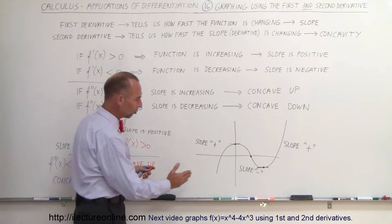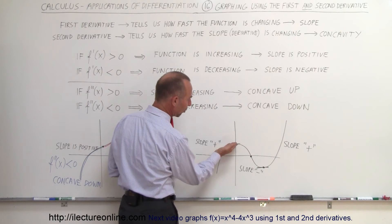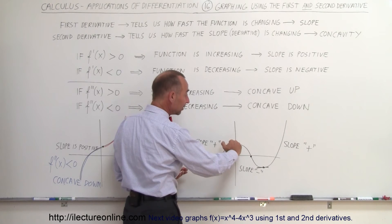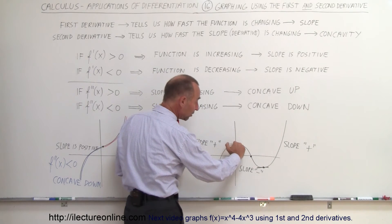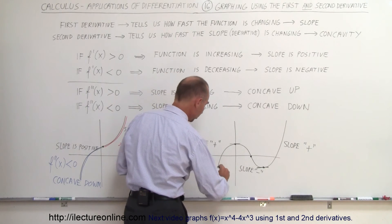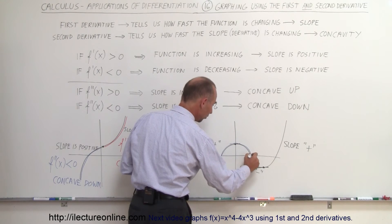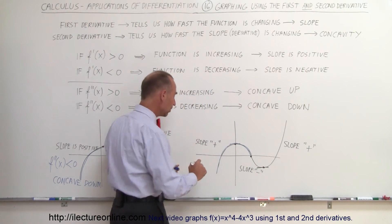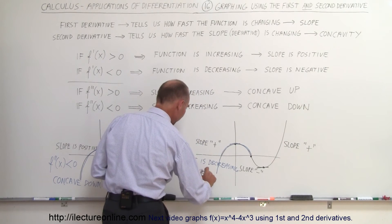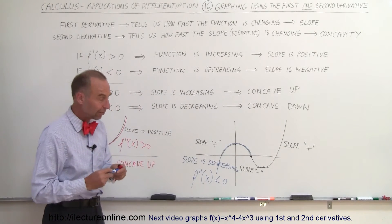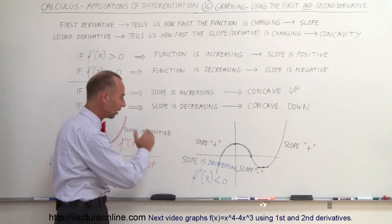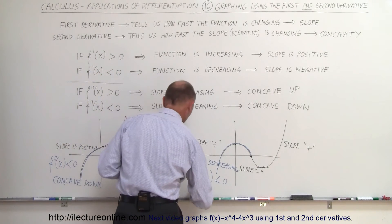What about the second derivative? Notice the slope here is getting smaller and smaller — it's decreasing. Eventually the slope reaches zero, then becomes a negative number, but the slope continues to decrease. Even though the slope is negative, the negative number gets bigger in absolute value, so the slope continues to decrease until we reach this point. All the way from there to there, the slope is decreasing, which means the second derivative must be less than zero. It doesn't matter if the slope is positive or negative — this whole section the slope is decreasing, so the second derivative is negative. We can therefore say it is concave down.